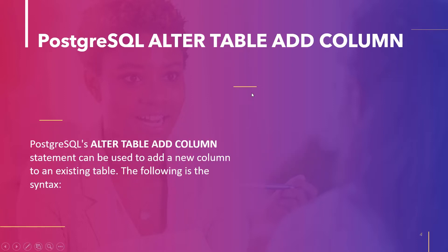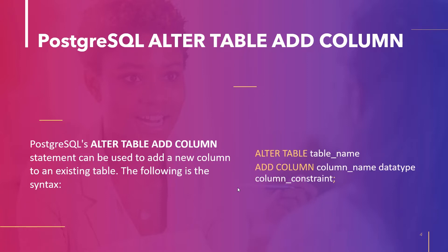The next topic is PostgreSQL ALTER TABLE Add Column. To add a new column to an existing table in PostgreSQL, we can use the ALTER TABLE ADD COLUMN statement. The syntax is: ALTER TABLE, TableName, ADD COLUMN keyword, followed by the column name, the data type of that column, and the column constraint.